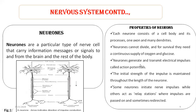Neurons generate and transmit electrical impulses, which are called the action potential. The initial strength of the impulse is maintained throughout the length of the neuron. Some neurons initiate nerve impulses while others act as relay stations where impulses are passed on and sometimes redirected. A relay station is a communication system for disseminating information.